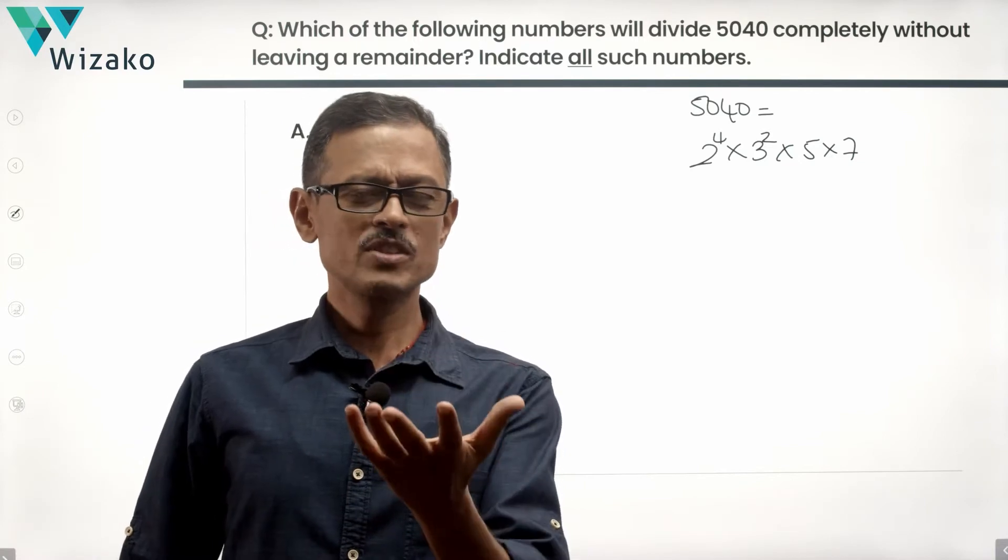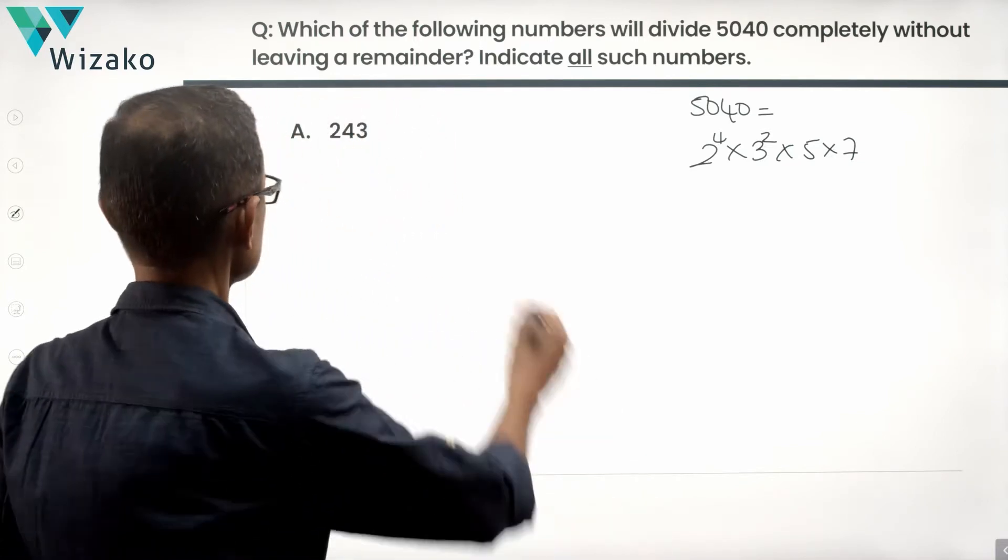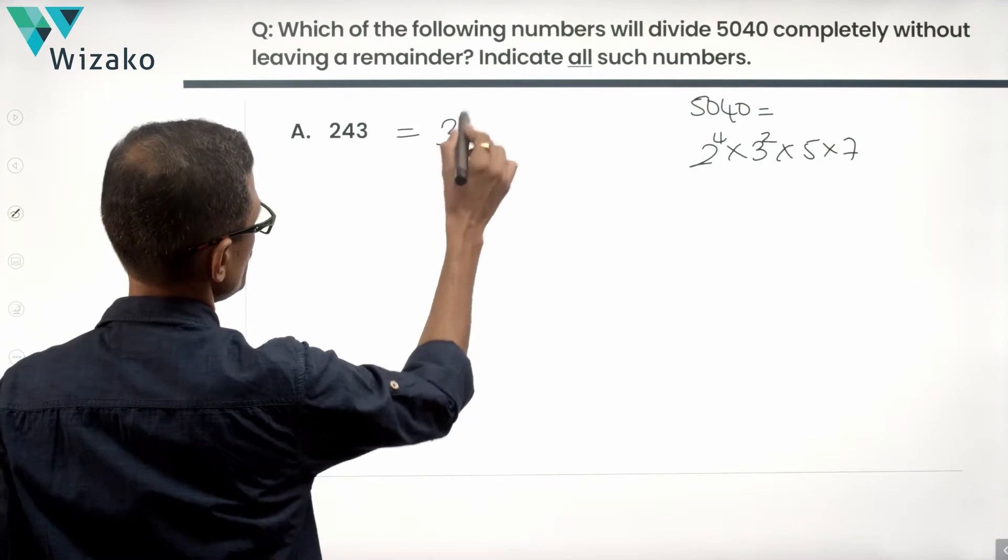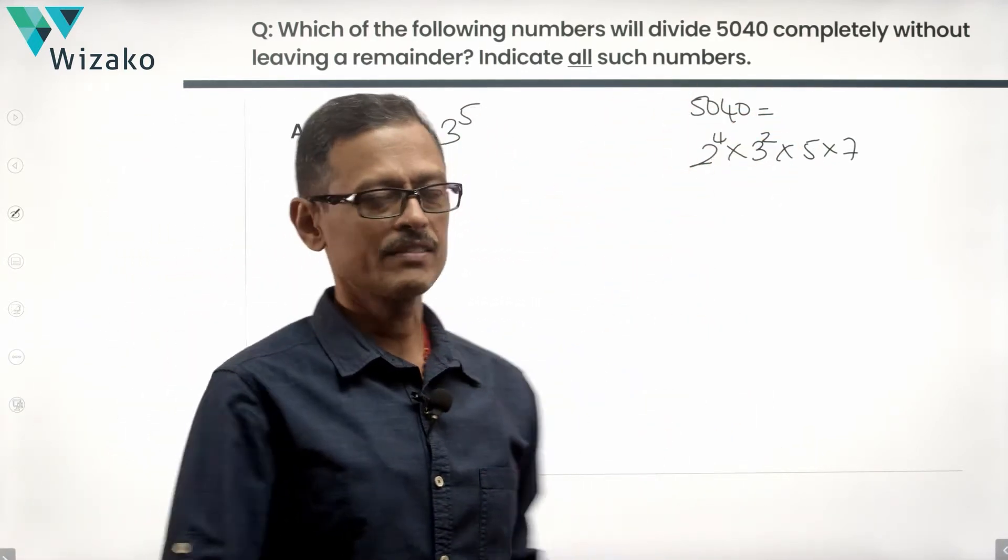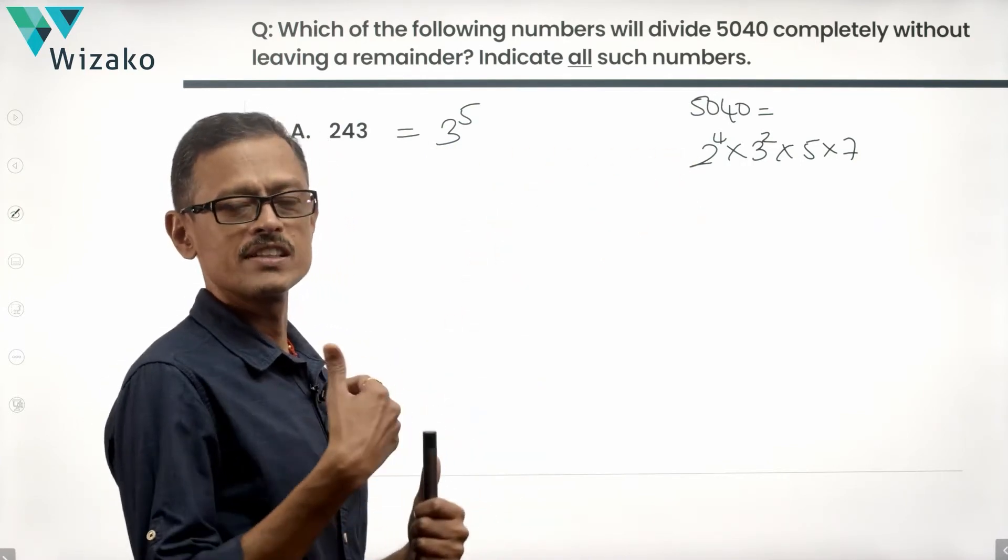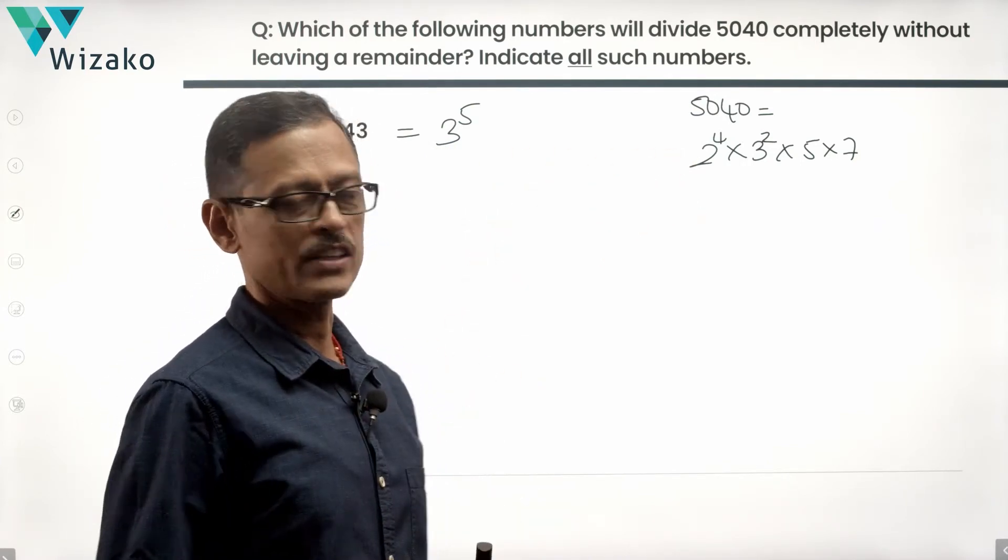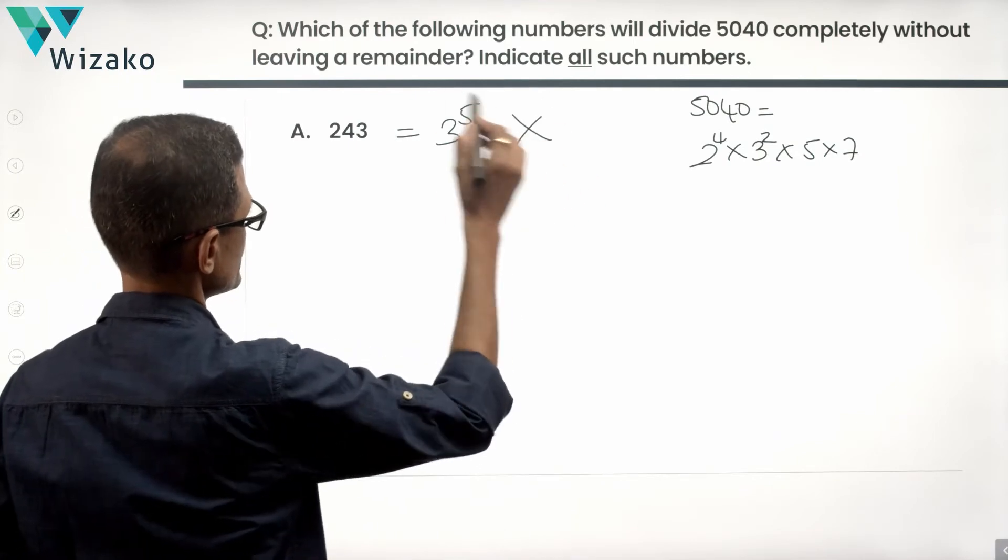243. 3 cube is 27. 3 power 4 is 81. 3 power 5 is this number. So this is 3 raised to the power of 5. 5040 has only a 3 square, whereas 243 is 3 raised to the power of 5. So this number will not be able to divide 5040. This is not the answer.